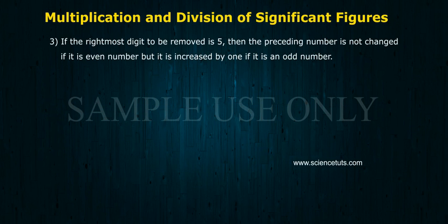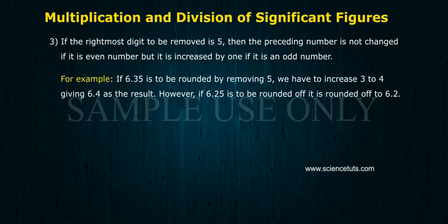Rounding Rule 3: If the rightmost digit to be removed is 5, then the preceding number is not changed if it is an even number, but it is increased by 1 if it is an odd number. For example, if 6.35 is to be rounded by removing 5, we have to increase 3 to 4, giving 6.4 as a result.